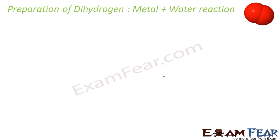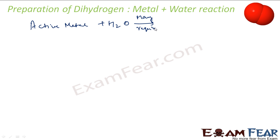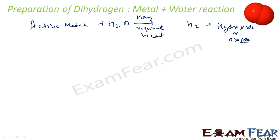Now let's look at the preparation of dihydrogen from metal-water reactions. Not all metals work — some active metals when added to water will give you H₂ and hydroxides or oxides, sometimes requiring heat. For example, sodium added to water does not need any heat; it reacts vigorously and produces NaOH plus H₂.